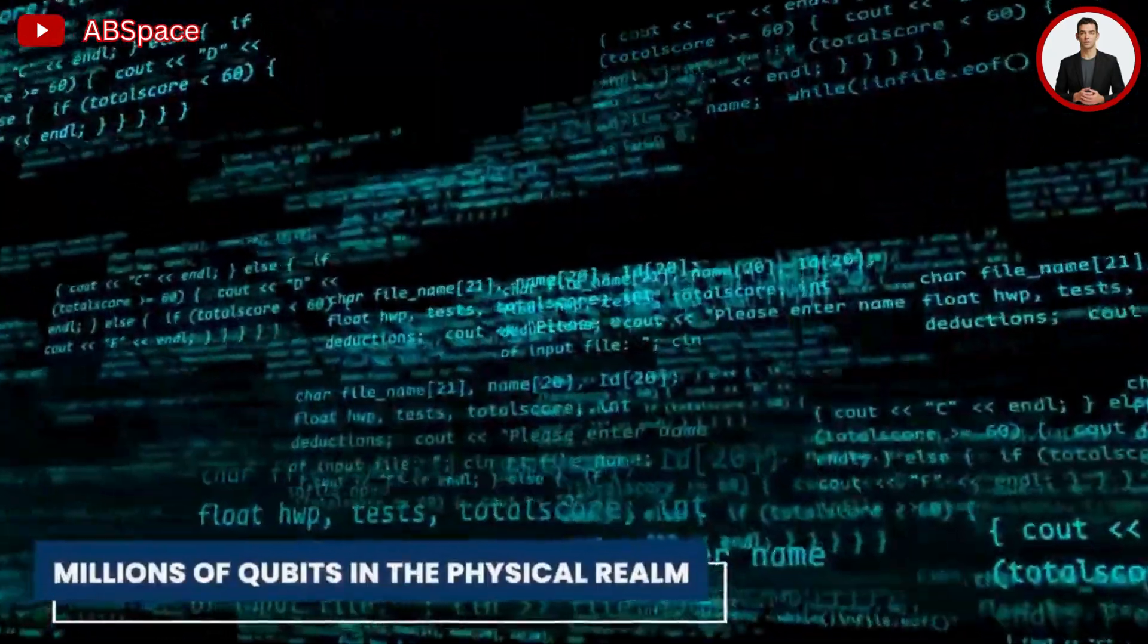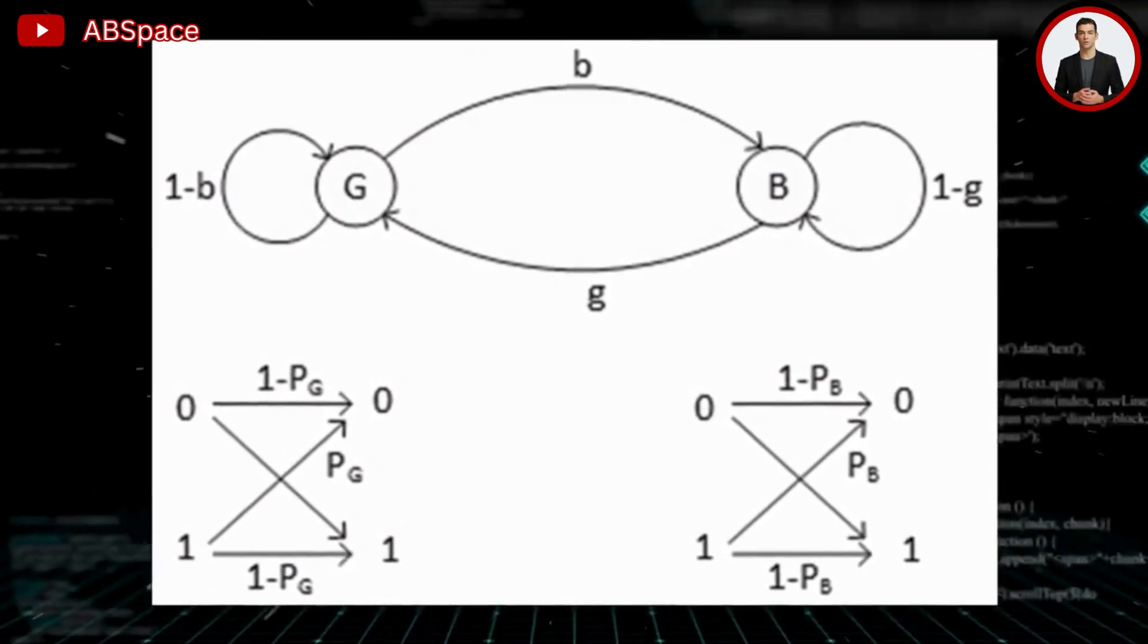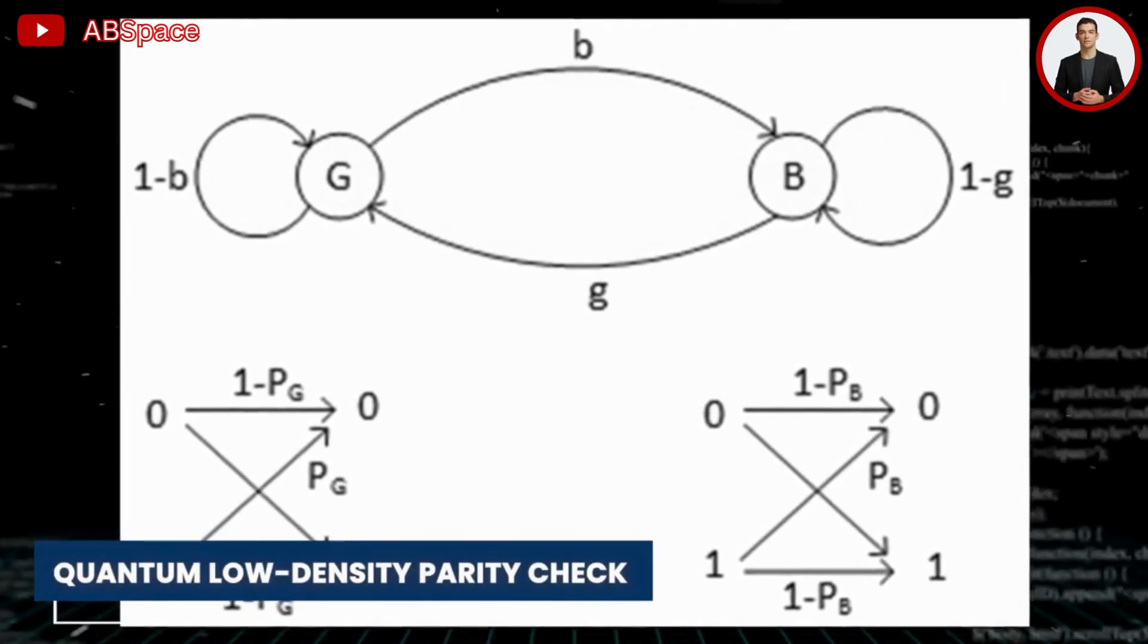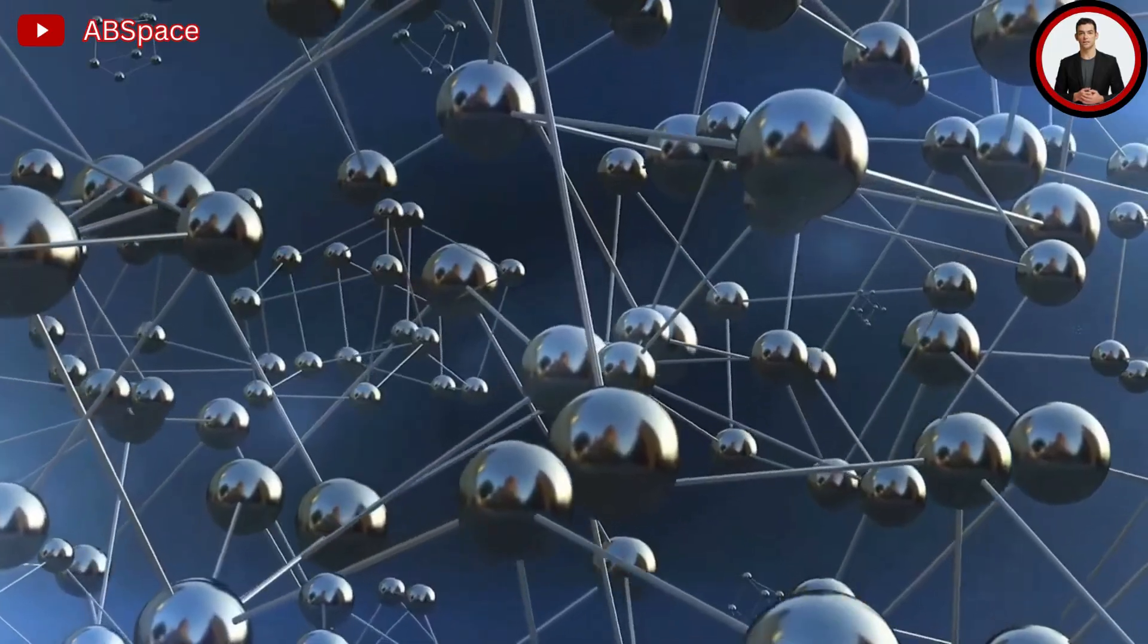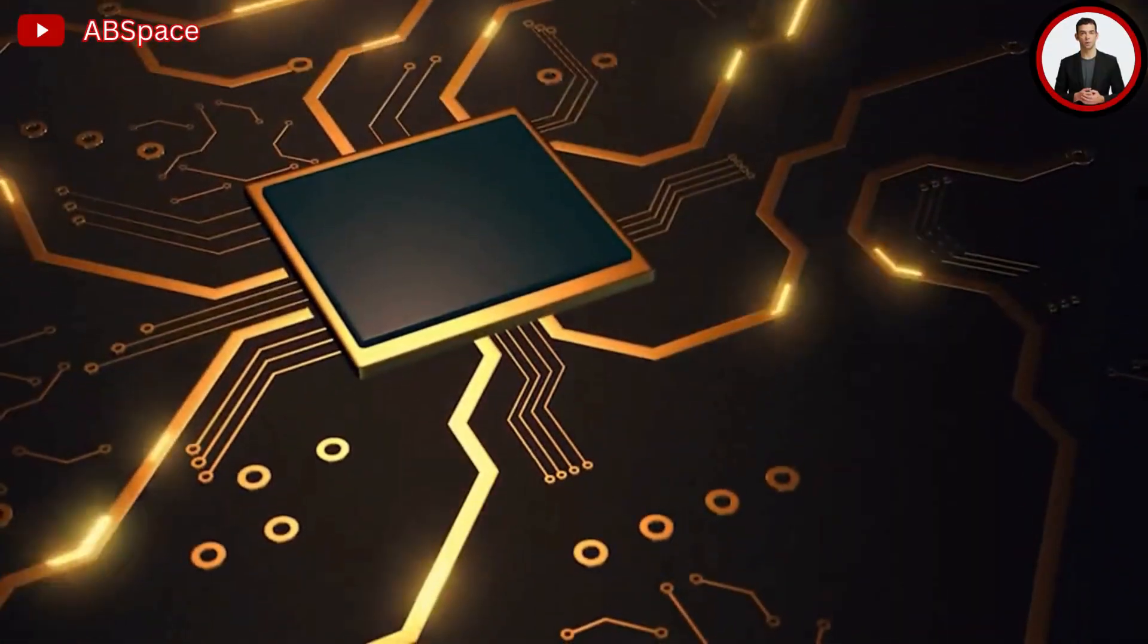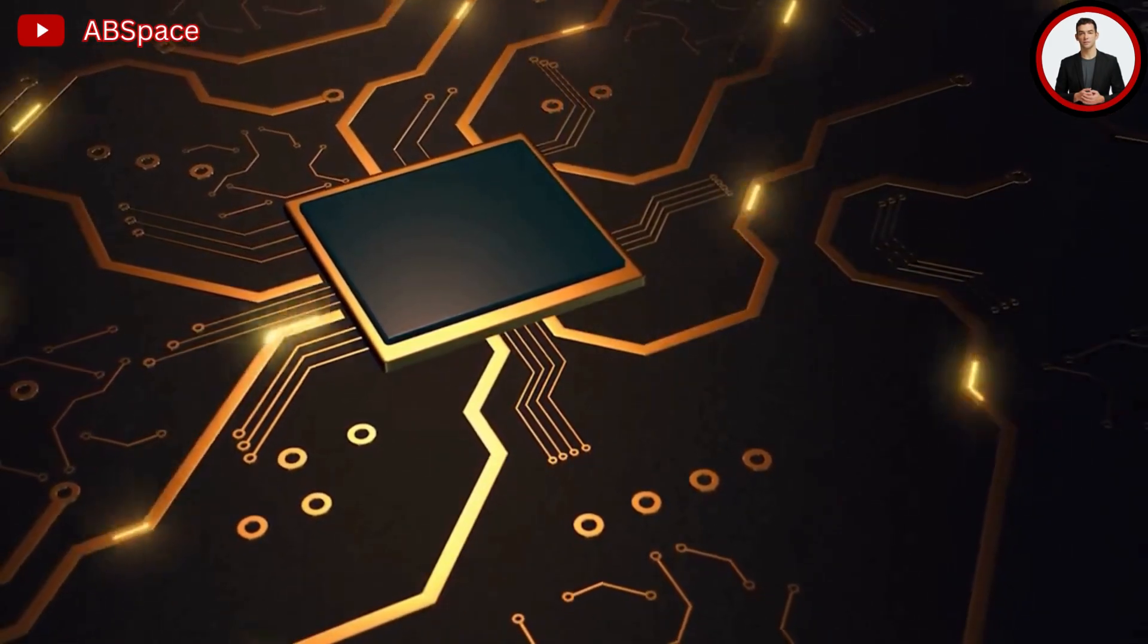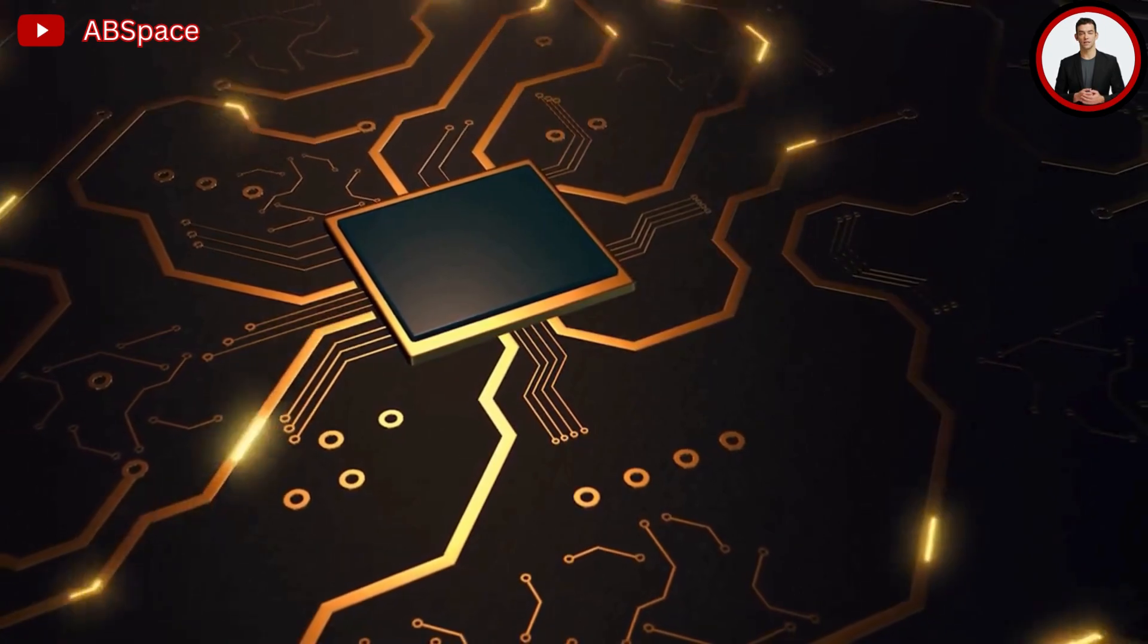However, during the past few months, physicists have been increasingly enthusiastic about a different error correction system known as quantum low density parity check. According to a preprint published by IBM researchers, this has the potential to reduce the proportion of errors by a factor of 10 or more. The business has stated it will now concentrate on developing circuits capable of holding a few QLDPC corrected qubits in a space around 400 physical qubits and then networking these chips together.